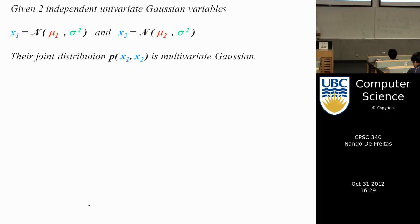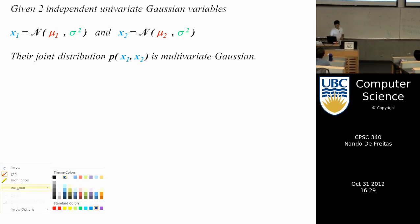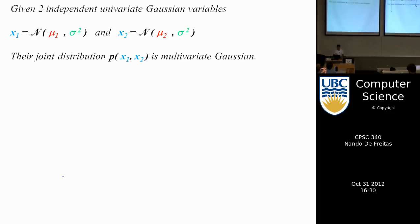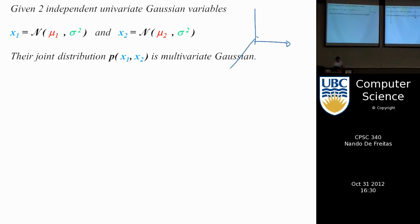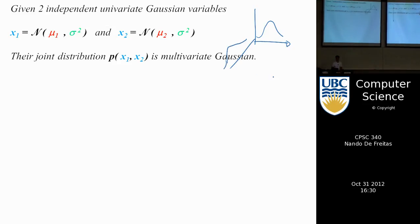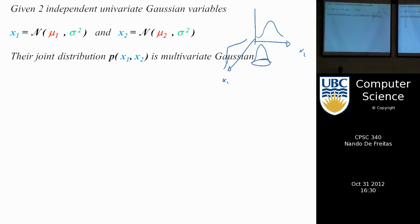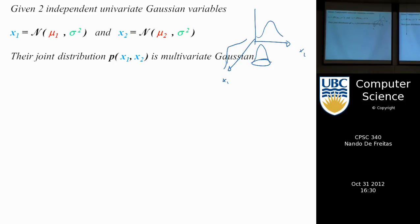The last thing I covered before leaving was this property of Gaussians. If you have two univariate Gaussians — one on each side — and you multiply them, you will get a 2D Gaussian. The probability of X1 and X2 equals the probability of X1 times the probability of X2. I'm factoring them as a product because they're independent.